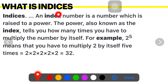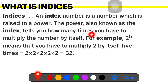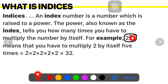Indices is nothing but an index number. Now what is an index number? A number which is raised to a power. The power, also known as index, tells you how many times you have to multiply the number by itself. For example, 2 raised to 5. Here 2 is the base, and the number written on the top — that is 5 — is called the index, or you can also call it a power.